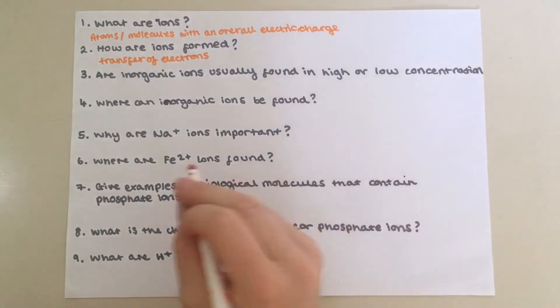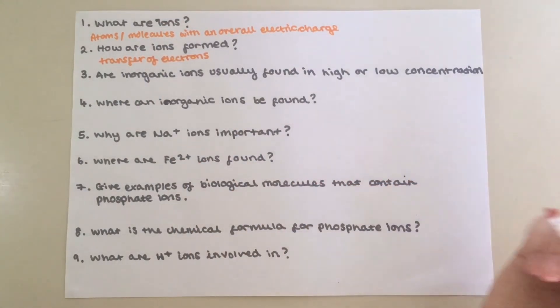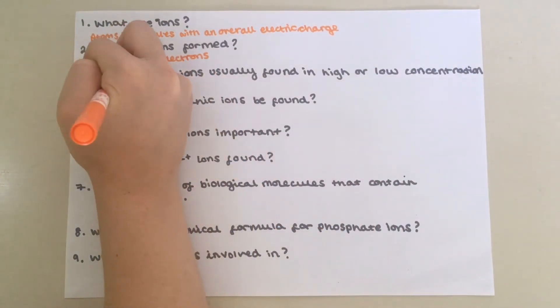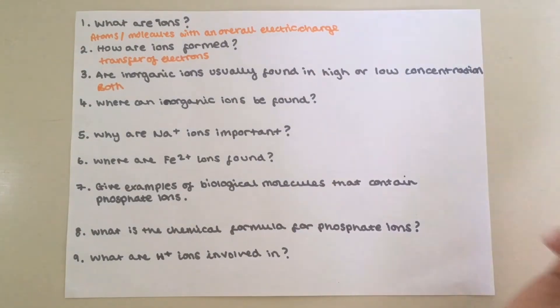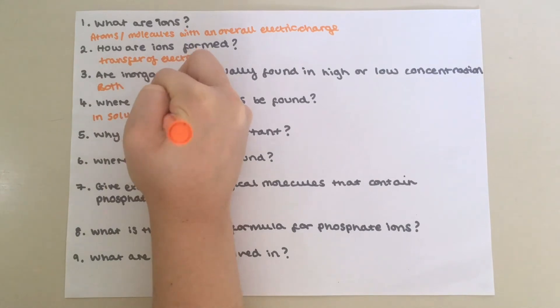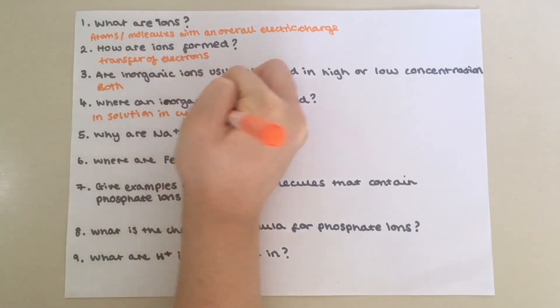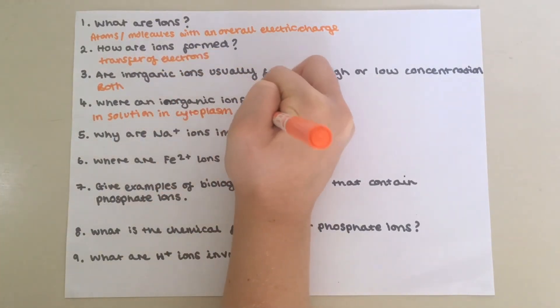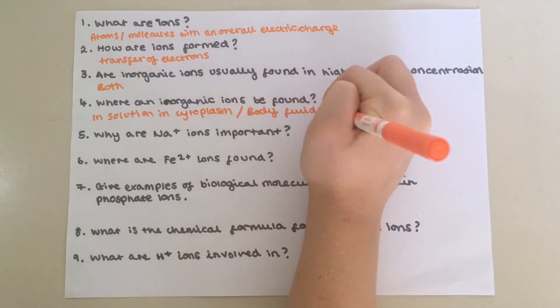Three, are inorganic ions usually found in high or low concentrations? This is actually a trick question because they are found in both. Four, where can inorganic ions be found? In solution in the cytoplasm or in body fluids of organisms.